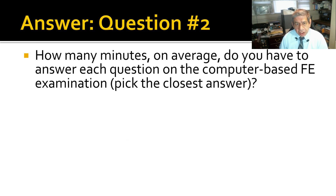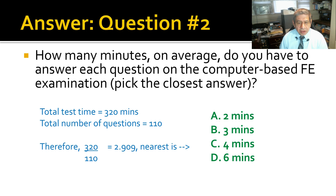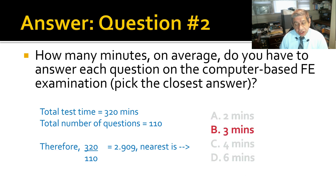Question number 2: How many minutes on average do you have to answer each question on the computer-based FE examination? Pick the closest answer. This one takes a little simple math. Since the total test time is 320 minutes and the total number of questions is 110, counting both morning and afternoon, you have 2.909 minutes per question. So the nearest answer is 3.